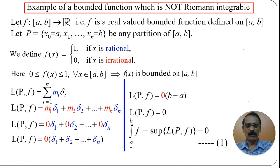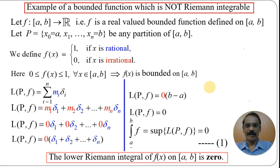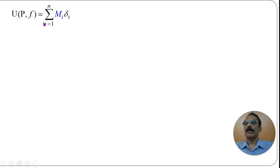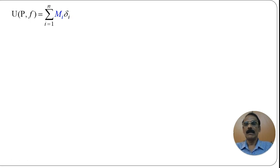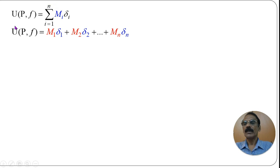Now we are going to calculate the upper Riemann integral. The upper Riemann sum is U(P, f) = Σᵢ₌₁ⁿ Mᵢ·Δᵢ, where Mᵢ is the supremum of f on the i-th subinterval and Δᵢ is its length, for i = 1, 2, 3, ..., n.